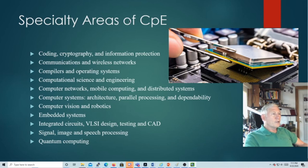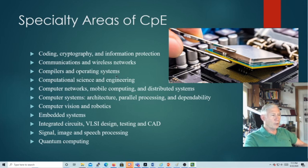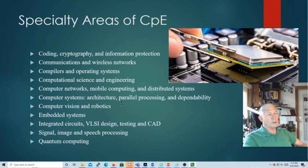Some of the specialty areas: coding, cryptography, information protection, communication, wireless networks, compilers and operating systems — this is pretty squarely CS related, but a CPE could definitely be involved. Computational science and engineering, faster ways to do things — deep learning is a big part of this, neural nets, deep neural nets, and the tools to do these things have just exploded. Computer networks, mobile computing, distributed systems. And then just the architecture — the ability to parallelize our algorithms so we can bring more computational power to bear on them. And then fault-tolerant, dependable systems.